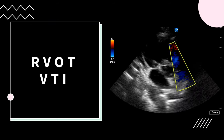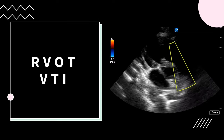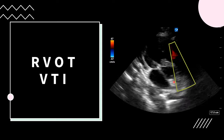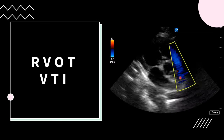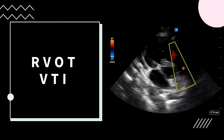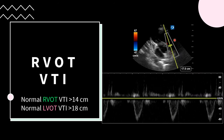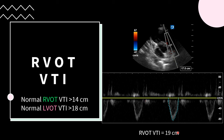Now that we have a subcostal short axis view at the level of the aortic valve, we'll place color flow Doppler over the RVOT and you'll notice a blue signal indicating blood leaving the heart. At this point, you can place pulse wave Doppler over this blue signal to get the RVOT VTI. Here we see the pulse wave sample gate placed in the RVOT — we activate pulse wave Doppler and get a tracing. Taking the integral of this wave gives an RVOT VTI of 19 centimeters, which is higher than normal since it was performed on a healthy individual.